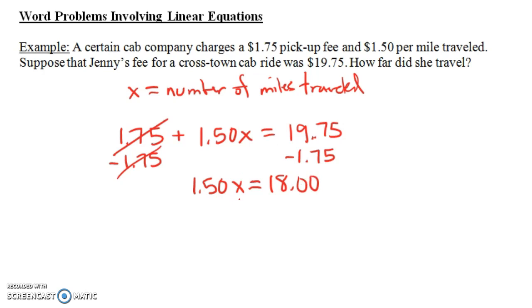If we divide both sides by $1.50, we get that X equals 18 divided by 1.5, which turns out to be 12.